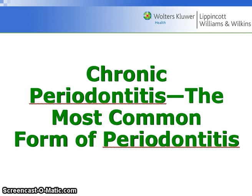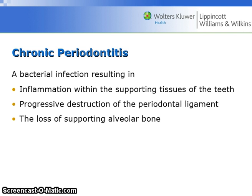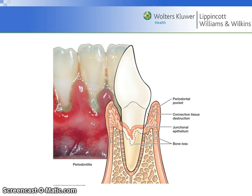Chronic periodontitis is the most common form of periodontitis. It is a bacterial infection resulting in inflammation within the supporting tissues of the teeth, progressive destruction of the periodontal ligament, and loss of supporting alveolar bone. Chronic periodontitis is characterized by inflammation within the supporting tissues of the teeth, progressive destruction of the periodontal ligament, and loss of supporting alveolar bone. See page 257, figure 15.3 for more information.